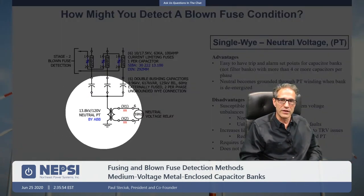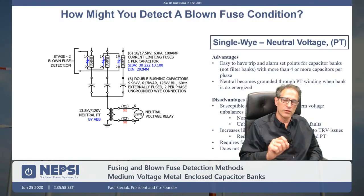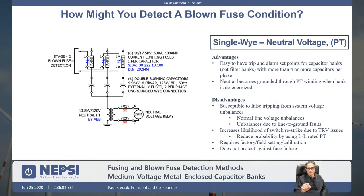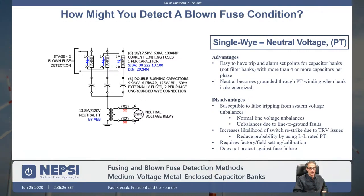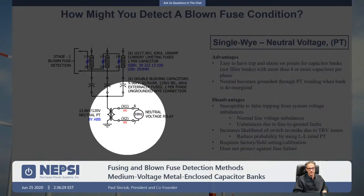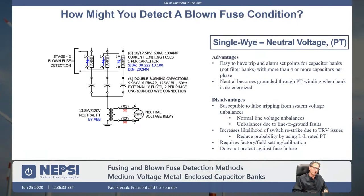One of the reasons we don't like the neutral voltage system: one, it causes a higher TRV on the system, and number two, it's susceptible to unbalance faults on the utility system. If you have a long distribution system and a line-to-ground fault five miles out from the substation, that fault will result in a neutral voltage shift on the capacitor bank, and those protection relays will act to trip the stage off. It requires coordination with upstream protection — and we don't like that. We like to remain independent if at all possible.